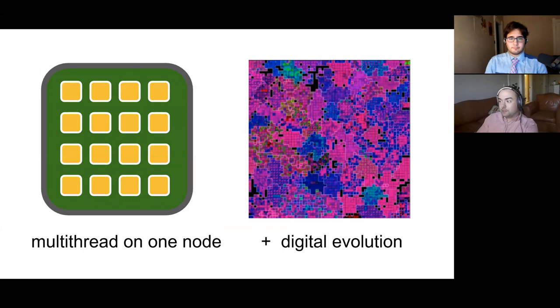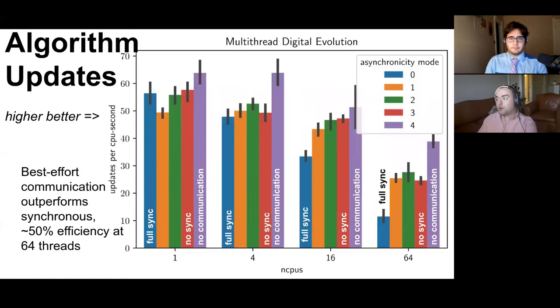In multi-threading with the digital evolution model, we were able to see a similar result where at 16 and 64 threads we had significantly better performance under the best effort model compared to the fully synchronous perfect communication model.